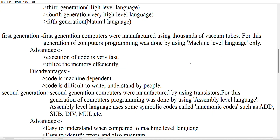In the first generation, computers were manufactured using thousands of vacuum tubes. Programming was done using machine level language only. Machine level language means everything is represented in the form of ones and zeros only, and the computer can only understand these two digits.